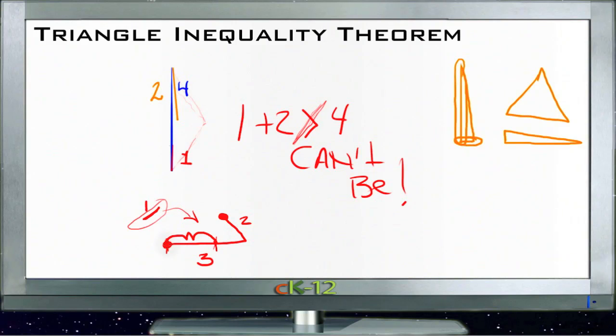2 plus 1 can't be smaller than 4 or it's not going to work. So that's our triangle inequality theorem: any side of a triangle has to be greater than the other two—we'll call those A and B—A minus B. The difference has to be greater than the difference between the other two, but less than the other two combined.